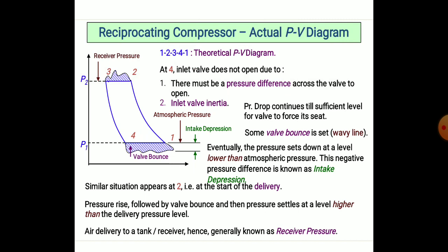There must be a pressure difference across the valve to open it — this is essential to operate the cycle smoothly. Due to inlet valve inertia, by dropping the continuous and sufficient level of forces, the pressure eventually sits down at a level below atmospheric pressure. This negative pressure difference is known as intake depression.